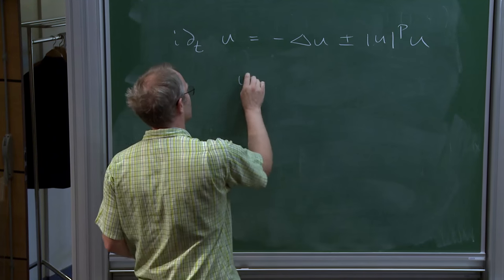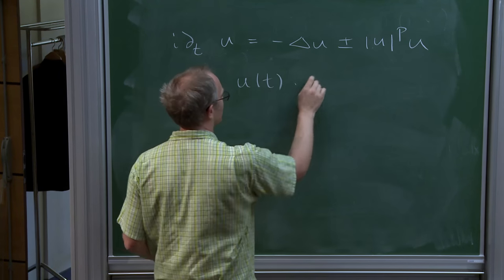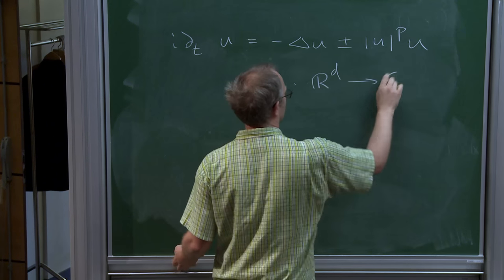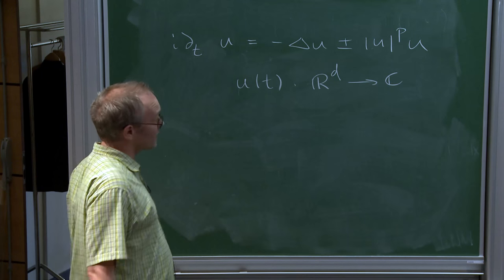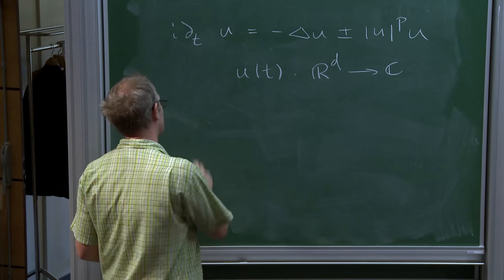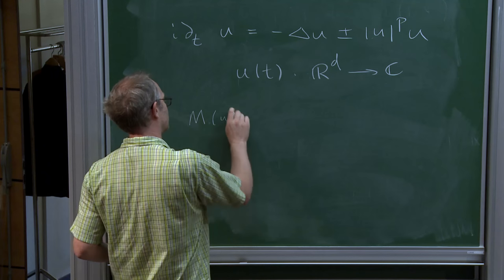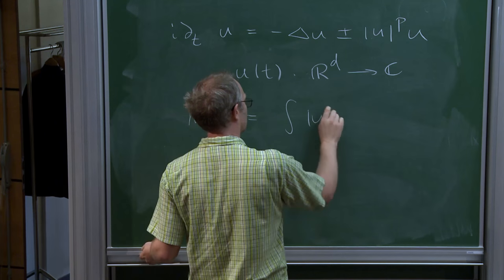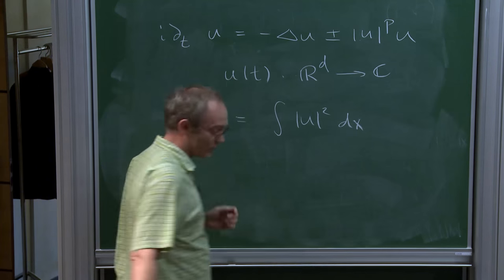This is the evolution equation for a field. At each time t, it maps R^d into the complex numbers. One conserved quantity for this is the mass—the mass of u, the integral of u squared, is conserved for the flow.